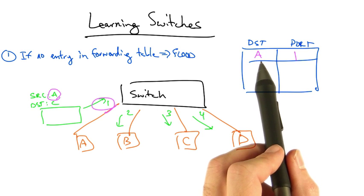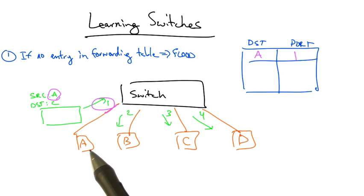So that in future, when it sees frames destined for host A, it no longer needs to flood, but can instead send the frames directly to port 1.